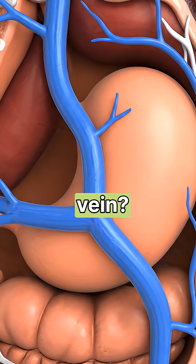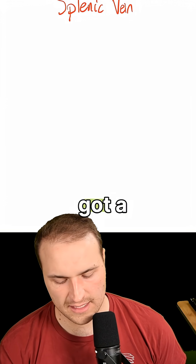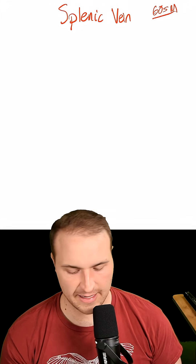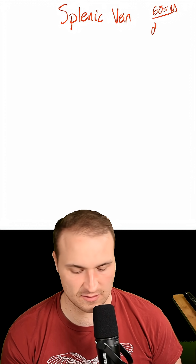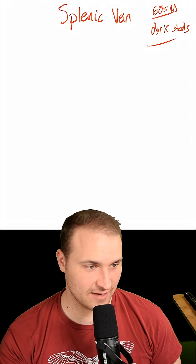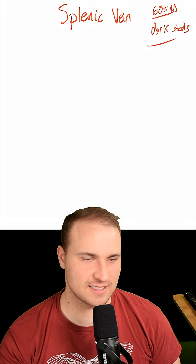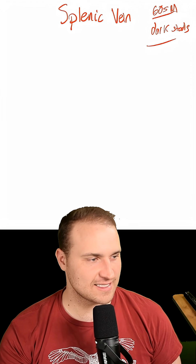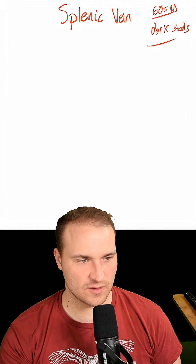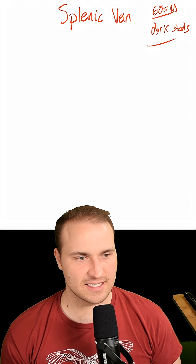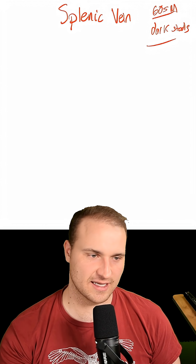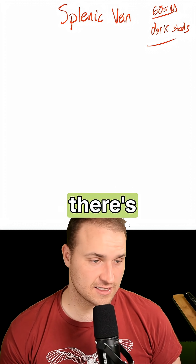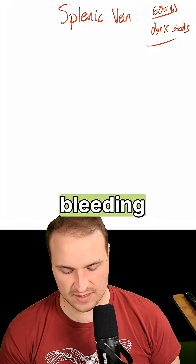What do we need to know about the splenic vein? Let's say we have a man in his 60s with a history of chronic pancreatitis who presents with hematemesis and dark stools. We see bleeding from varices in the gastric fundus, so there's some sort of portal hypertension going on, and we need to know which vascular structure is most likely responsible. Hematemesis indicates an upper GI bleed, and dark stools also suggest upper GI tract bleeding.